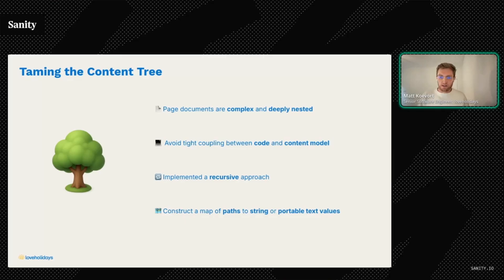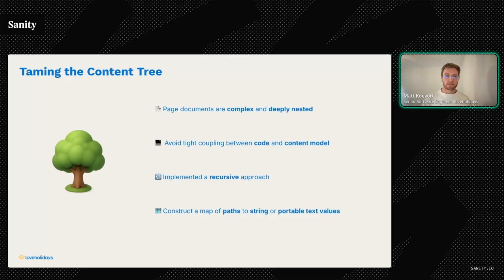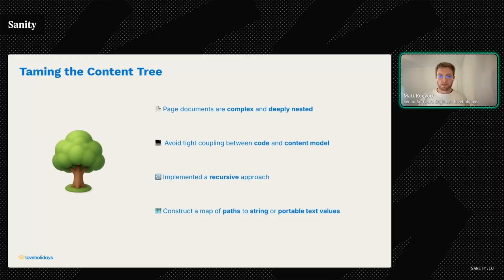One of our biggest challenges was how to translate complex, nested documents without tightly coupling our translation code to specific content models. Sanity documents can have deeply nested structures, arrays, and references, all of which needed thoughtful handling during translation. We tackled this by developing a recursive approach that could handle any document structure without requiring constant updates to our translation code as our content models evolved. Our solution traverses the Sanity document structure recursively, creating maps that track paths to translatable string and portable text fields. The system can be configured to exclude specific fields or paths from translation, giving us fine-grained control while maintaining automation. When our engineering team adds new components or fields to our content models, the translation system automatically processes them without requiring code changes — the system adapts to our ever-evolving content needs rather than constraining them.